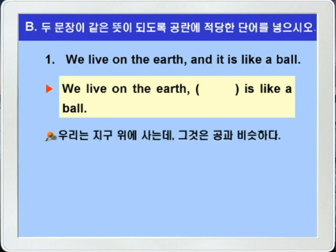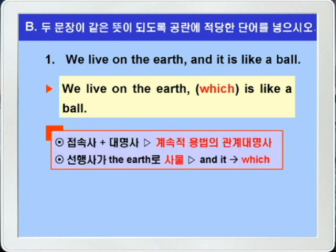'We live on the earth', 우리는 지구 위에 산다, 'and it', 그런데 그것은 즉 지구는, 'is like a ball', 공과 비슷하다. 아래 문제를 보면 'We live on the earth' 다음에 쉼표가 있고 'blank is like a ball'이렇게 되어 있죠. 따라서 블랭크가 하나니까 윗 문장의 접속사 and와 사물을 가리키는 대명사 it을 대신할 수 있는 계속적 용법의 관계대명사 which를 쓰면 정답이 되겠습니다.